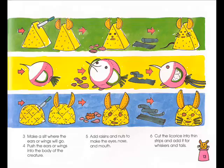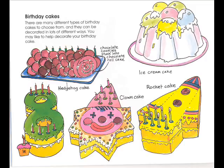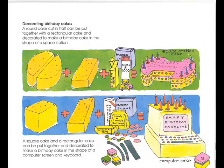Birthday cakes: There are many different types of birthday cakes to choose from and they can be decorated in lots of different ways. You may like to help decorate your birthday cake. Examples include: chocolate cookie stuck in chocolate roll cake, hedgehog cake, clown cake, ice cream cake, and rocket cake. A round cake can be cut in half and put together with a rectangular cake and decorated to make a birthday cake in the shape of a computer screen and keyboard.